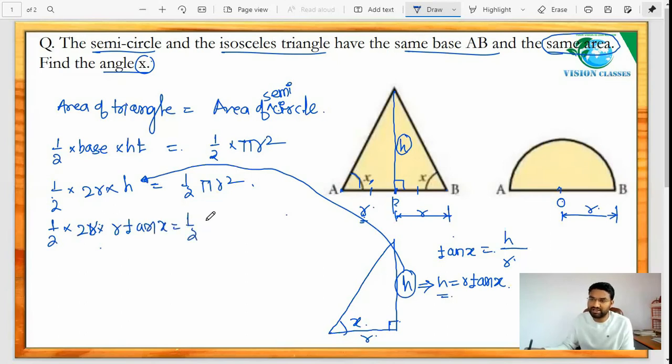...it is equal to one half π r². So this r squared and this r, this r, this r cancel out, even the two cancels out, so we are left with tan of x is equal to π by 2...